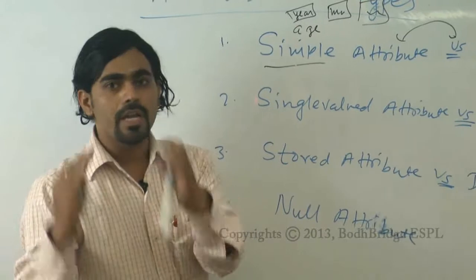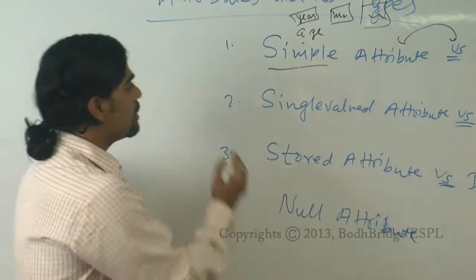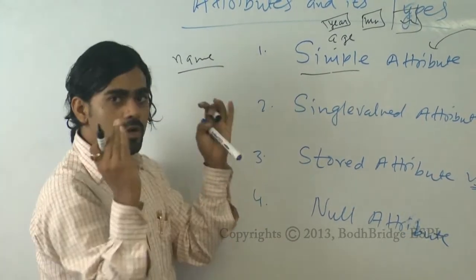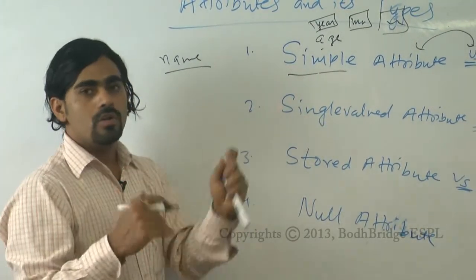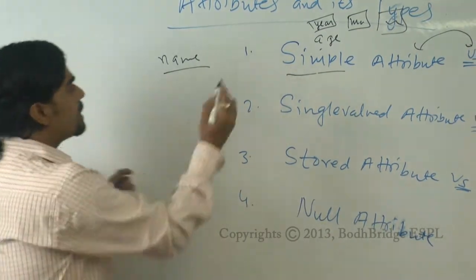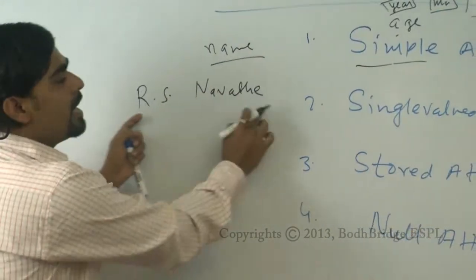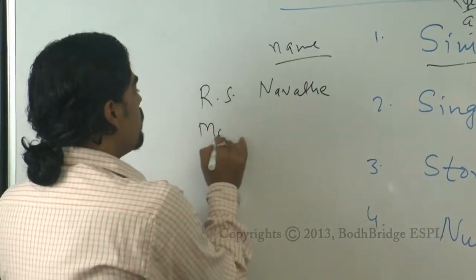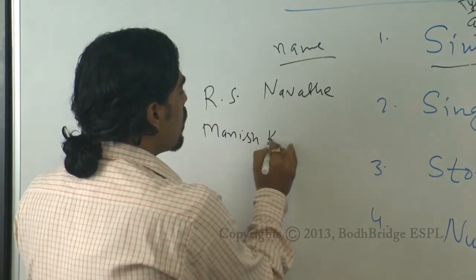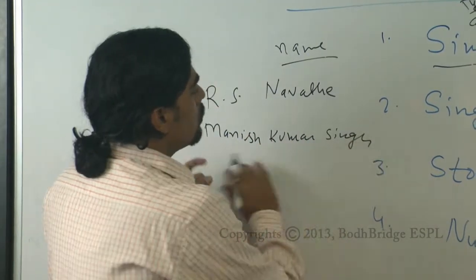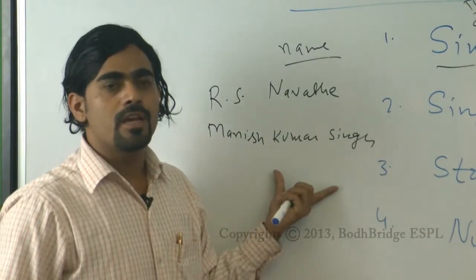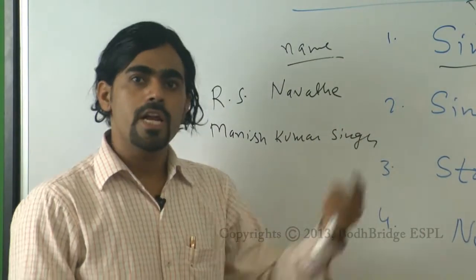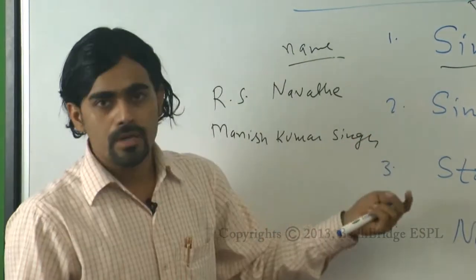It depends on your design choice. You can make any attribute simple or composite. For example, when creating a student database, you might store a full name as a single field — combining first, middle, and last name in one — making it a simple attribute.